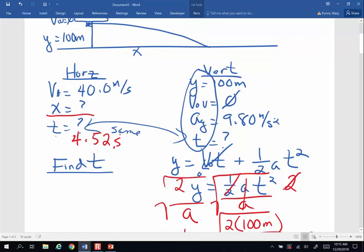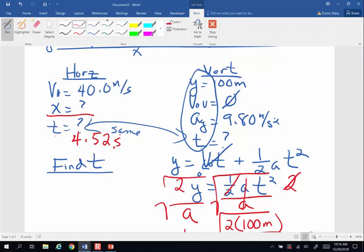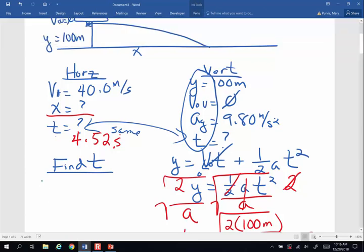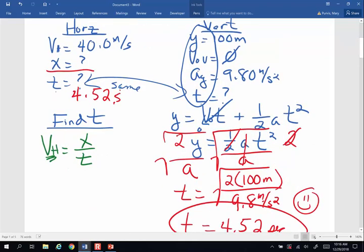The only equation you can use on the horizontal side is horizontal velocity is x over t because the horizontal velocity is steady or constant, if we can ignore air friction. And I'm looking for x, so x is going to be horizontal velocity times t.